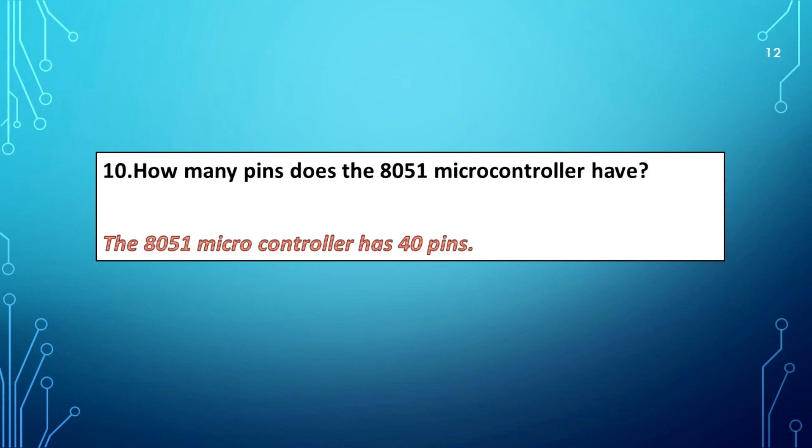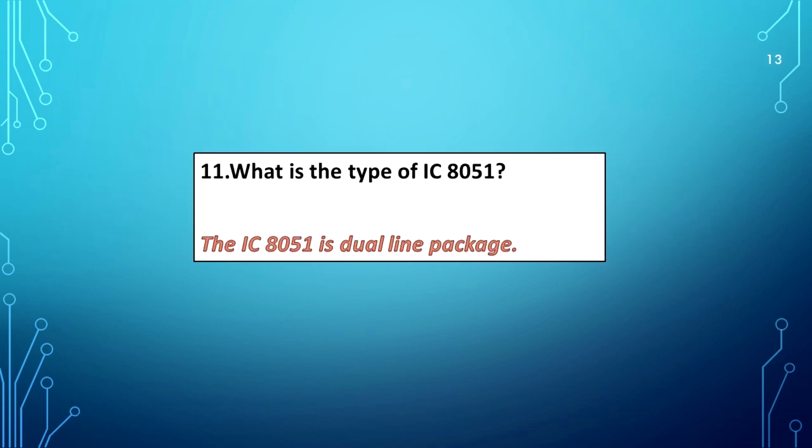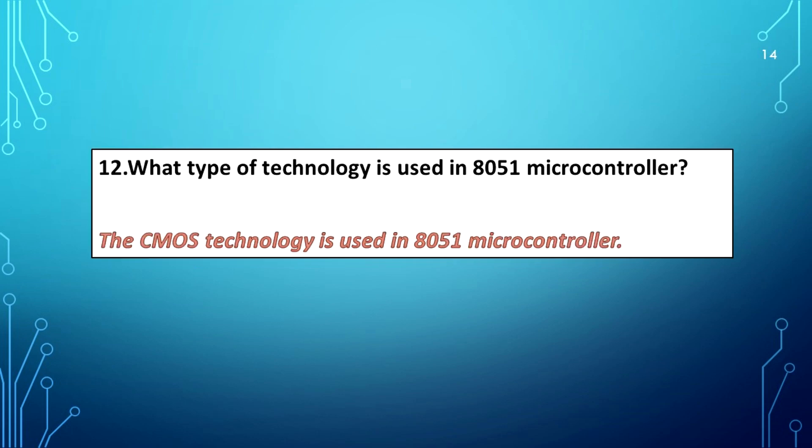How many pins does the AT51 microcontroller have? The AT51 microcontroller has 40 pins. What is the type of IC AT51? The IC AT51 is dual line package. What type of technology used in AT51 microcontroller? The CMOS technology is used in AT51 microcontroller.